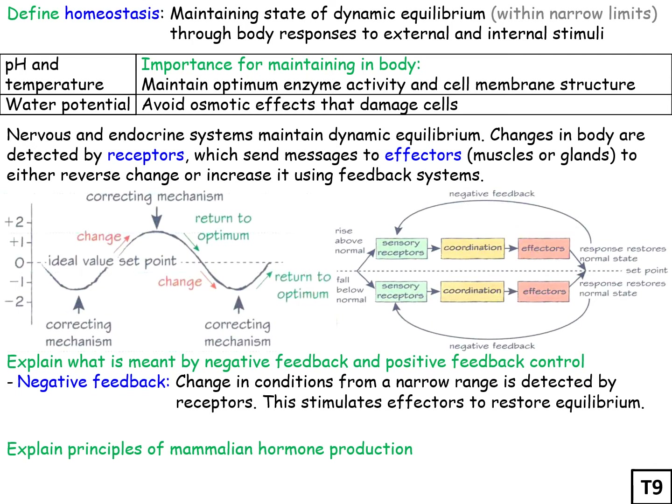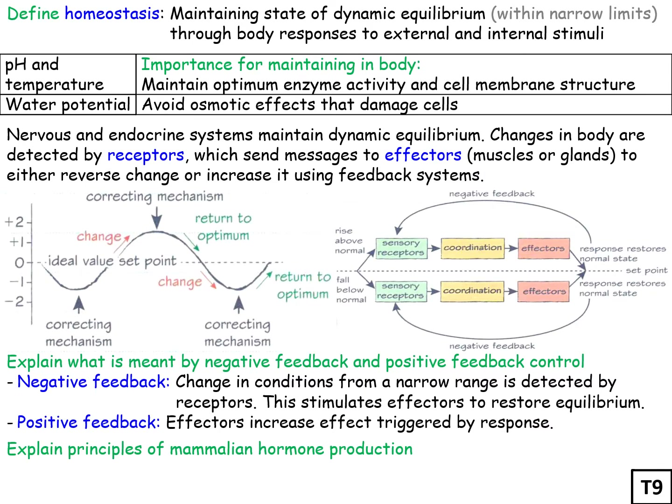Another type of feedback is the positive feedback system. Here the effect increases the change induced by the response. So when something increases above the normal homeostatic level, you increase it even further.